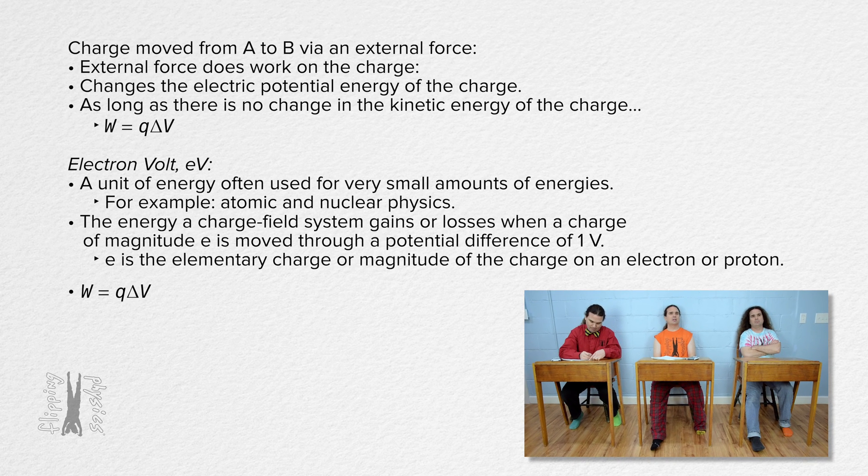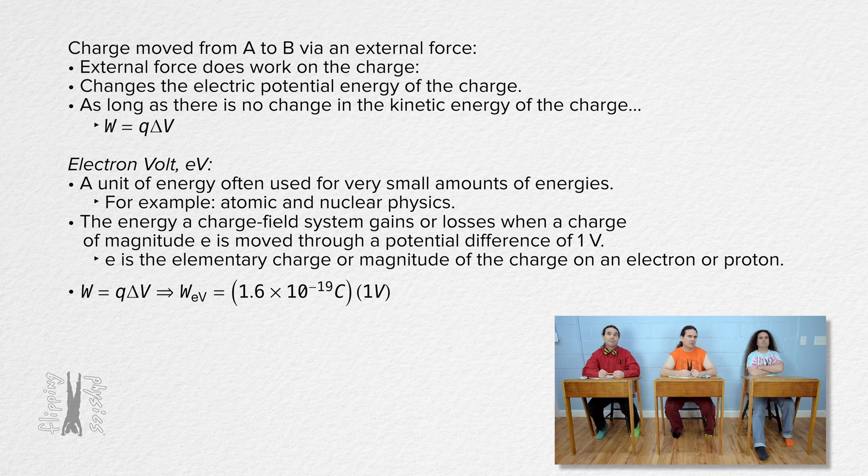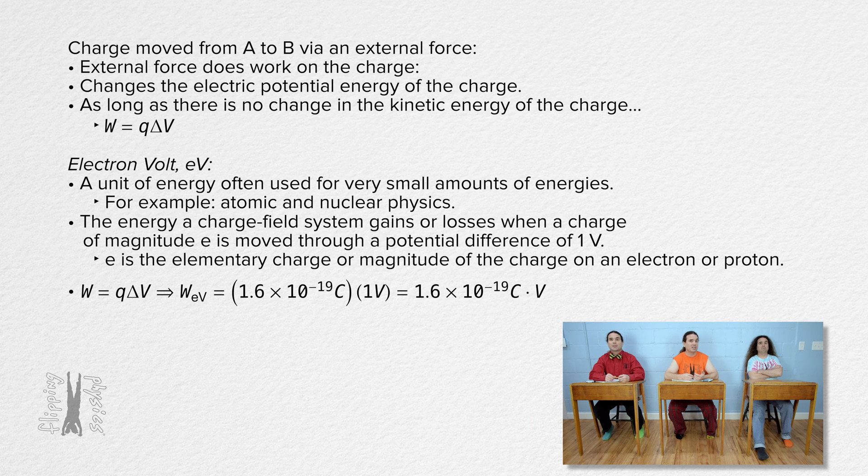We know work equals charge times electric potential difference. The charge on a proton equals 1.6 times 10 to the negative 19 coulombs. And the electric potential difference is 1 volt, so 1.6 times 10 to the negative 19 coulomb-volt.